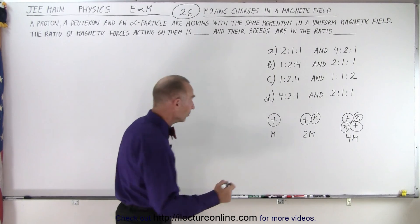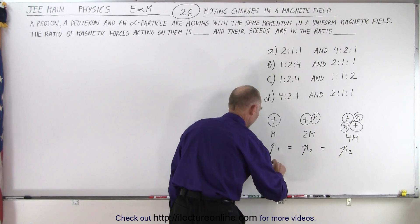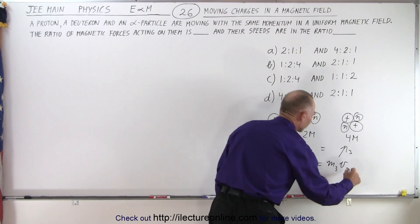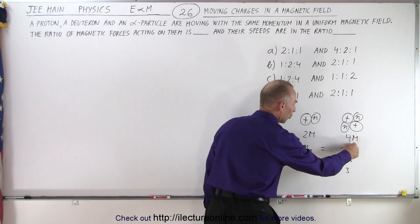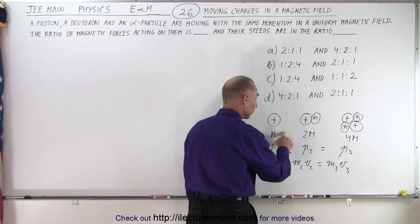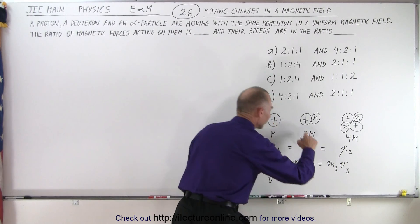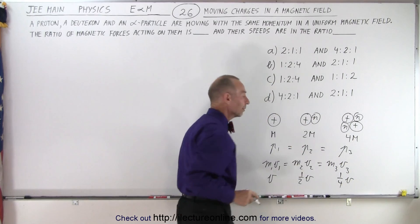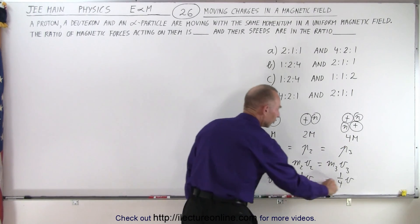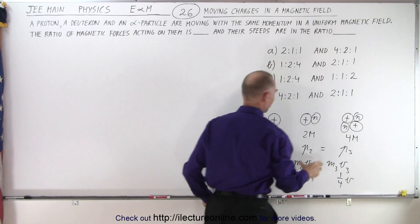And if they have the same momentum, if p1 equals p2 equals p3, what we can then say is that the mass 1 times velocity 1 must equal mass 2 times velocity 2, which must equal mass 3 times velocity 3. And if this one has 4 times the mass of this one, then it should have 1 quarter the velocity. And if this one has twice the mass of this one, then it should have half the velocity. So if I have v for velocity here, then here I have 1 half v for the velocity of this one and 1 quarter v for the velocity of that one. So now I have the relative masses for all three and have the relative velocities for all three.